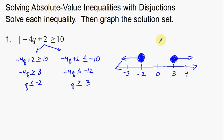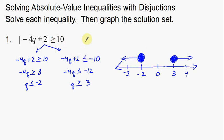To recap: when we split absolute value inequalities, the first inequality we write exactly as we see it, just removing the absolute value symbols. The second time, the left side stays the same, but the number on the right becomes negative, and we also switch the inequality symbol. That's an example of a disjunction. Now I'm going to do an example of a conjunction.